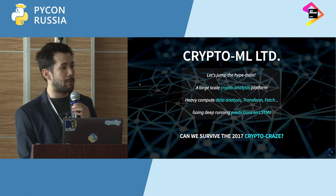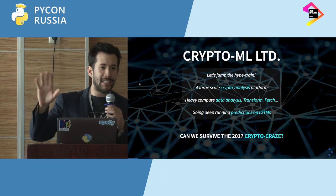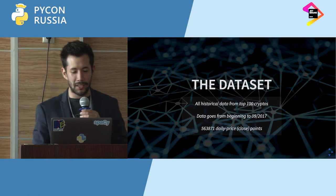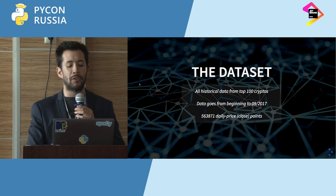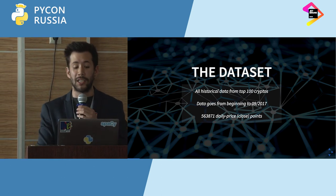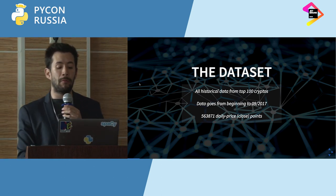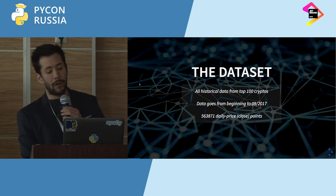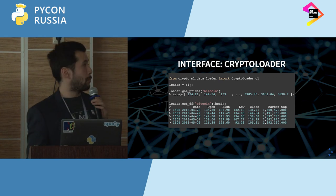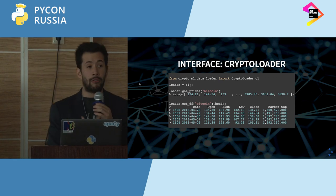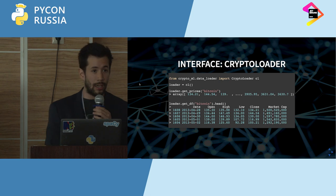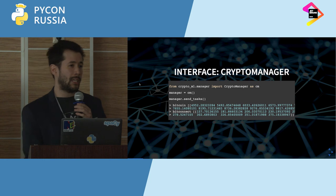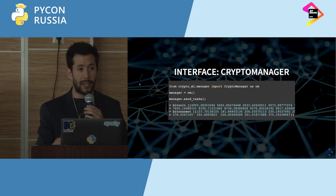We're going to set the premise: can we survive the 2017 crypto craze, when everybody was going crazy putting their mortgage and savings in — and then probably lost it. The dataset is all historical data from the top 100 cryptos, going back from the beginning to September 2017, with over 500,000 fields. The interface we'll use is a crypto loader that lets you load some of the cryptocurrencies into a pandas DataFrame and trigger the execution for predictions.